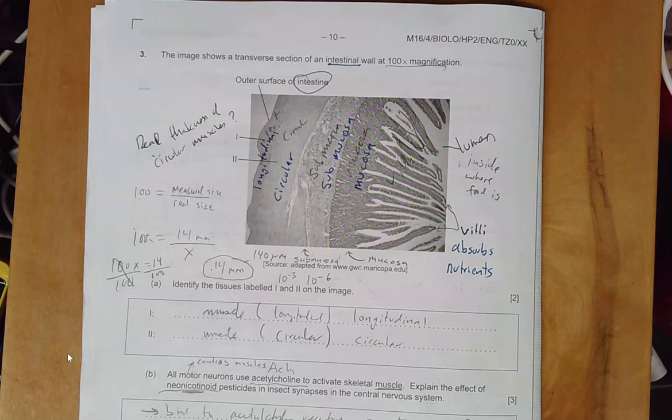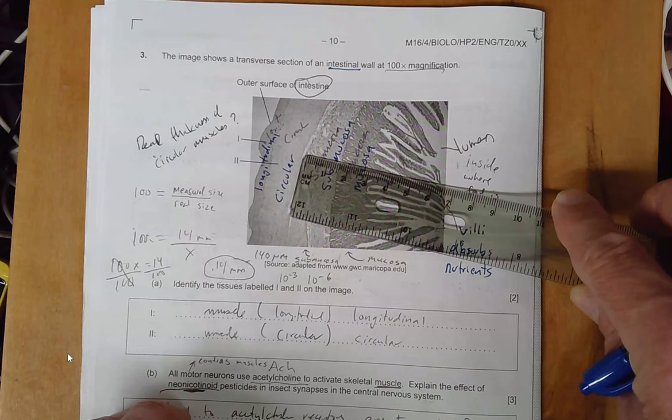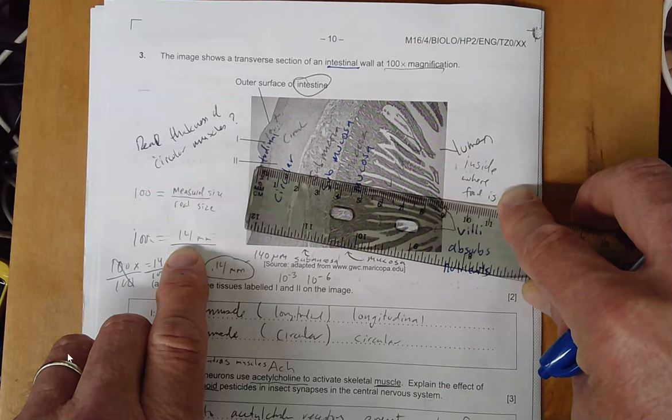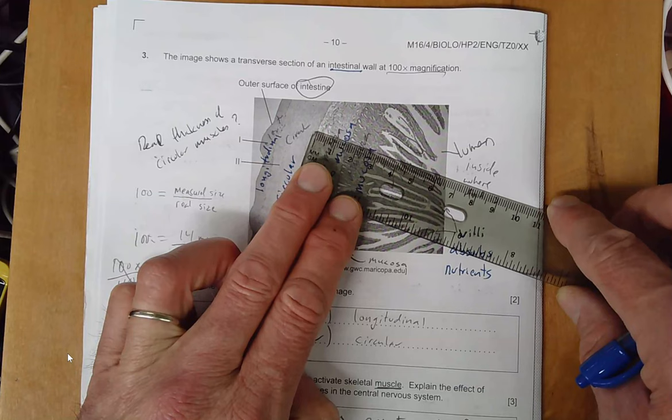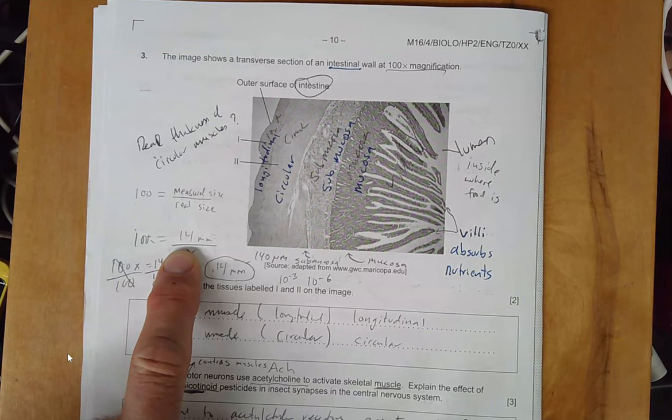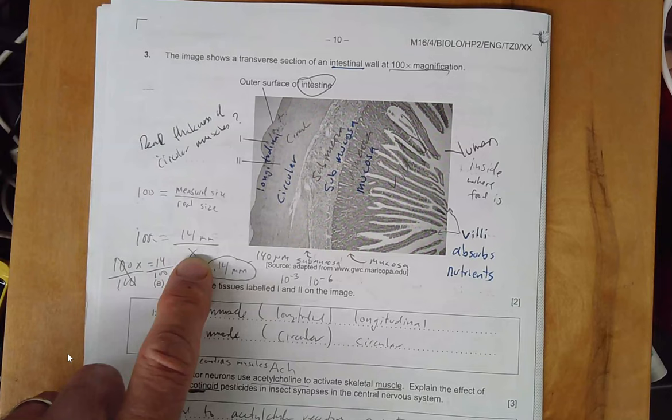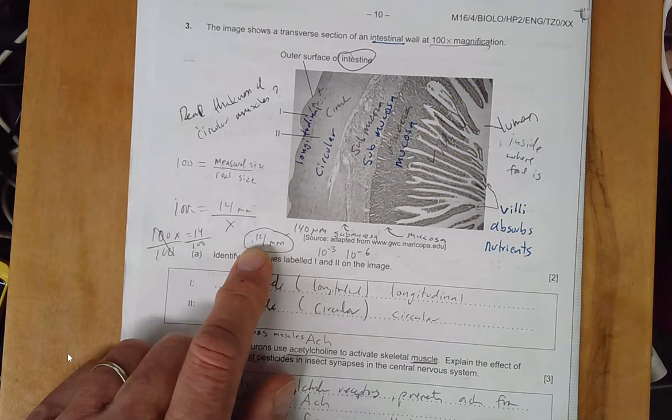Say it asks you what's the actual width of the circular and longitudinal muscles, or say the question was the thickness of the submucosa at this spot here. It would be about 14 millimeters, so I put a 14 here. So 100 equals 14 over X, and then if you divide both sides by 100 you get the value in millimeters of what the actual size is.